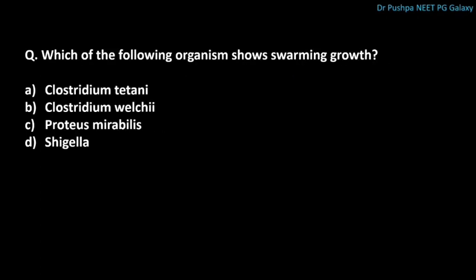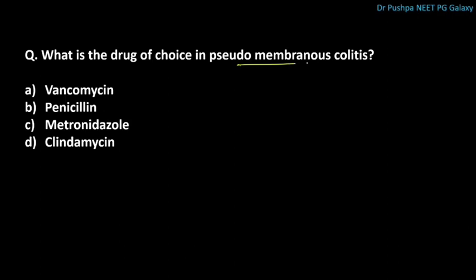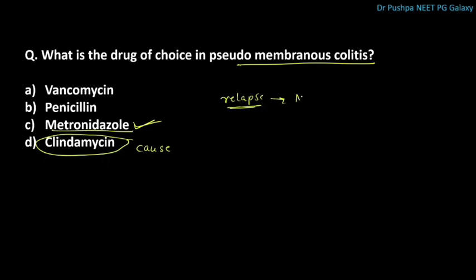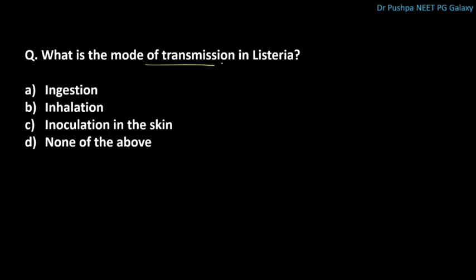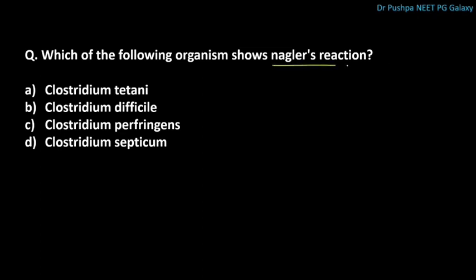Which organism shows swarming growth? The correct answer is Proteus mirabilis. What is the drug of choice in pseudomembranous colitis? The drug of choice is metronidazole. Clindamycin is the cause of pseudomembranous colitis. The drug of choice for relapse is also metronidazole; if relapse persists more than 48 hours, it is vancomycin. What is the mode of transmission in Listeria? The correct answer is ingestion.